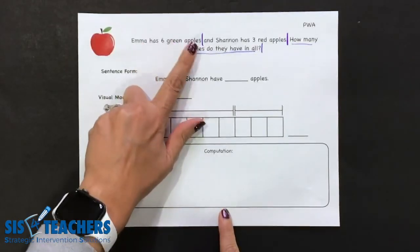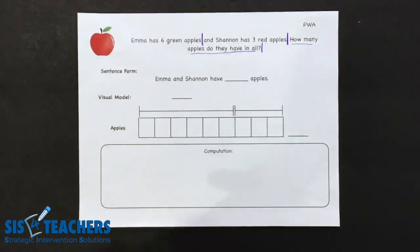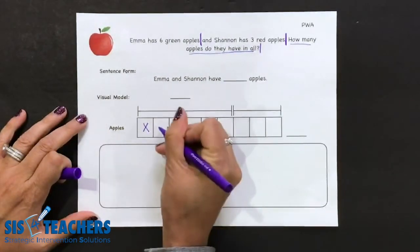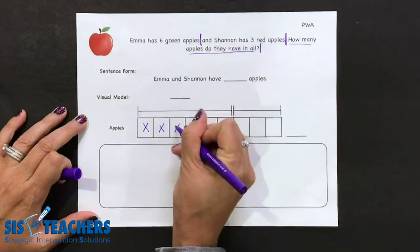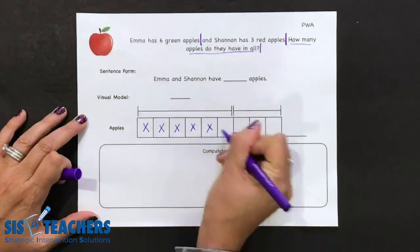Emma has six green apples. I'm going to put Emma's apples as X's. I'm going to count out six. One, two, three, four, five, six.